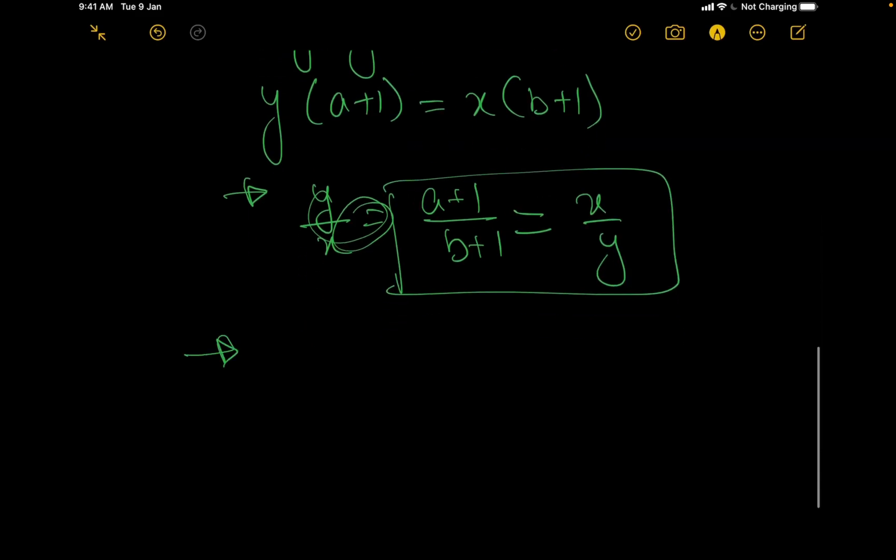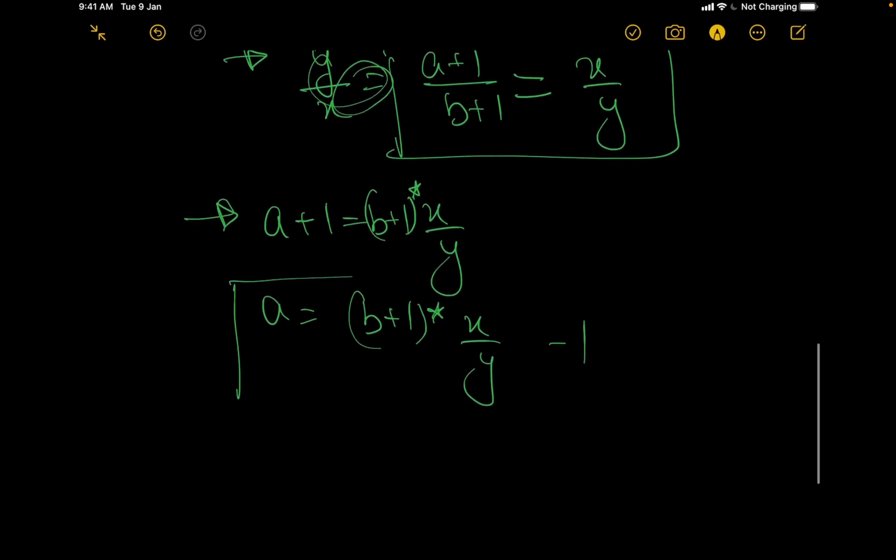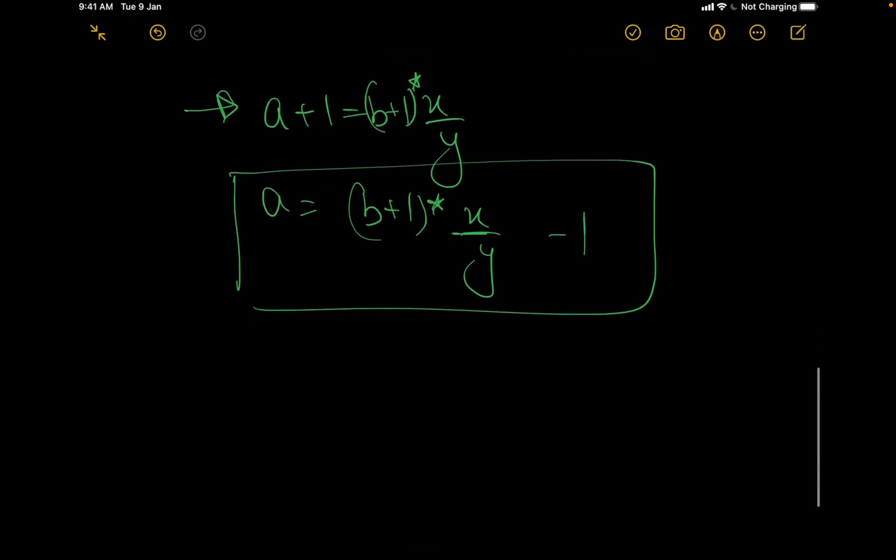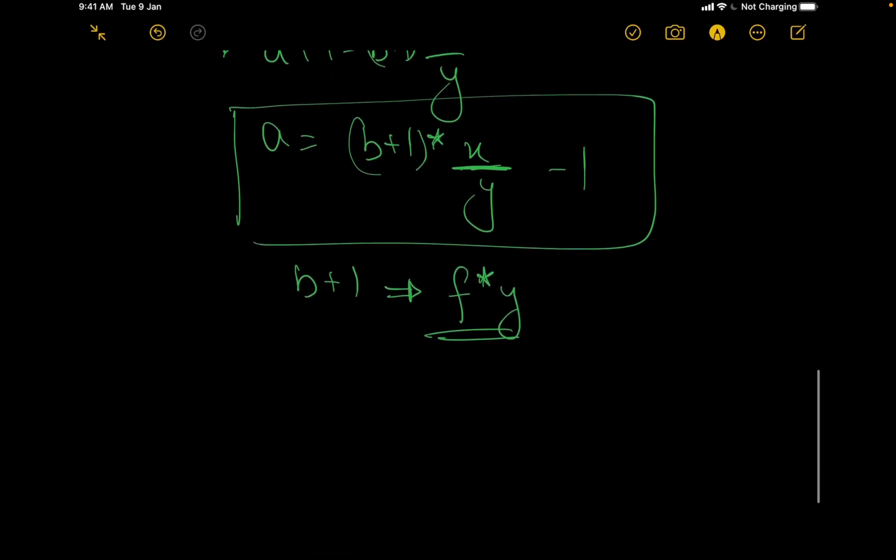That technically means that a plus 1 is equal to x by y times b plus 1, or a is equal to b plus 1 times x by y minus 1. Now because we do not want anything in the denominator, let us say b plus 1 is some multiple of y. Let us call it f times y.